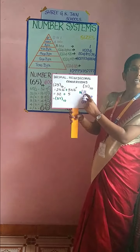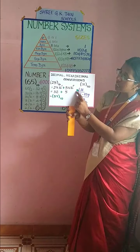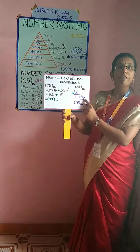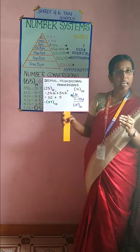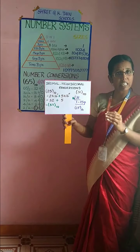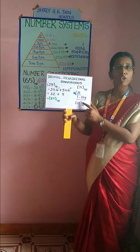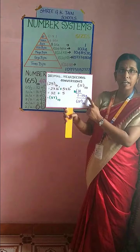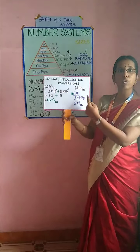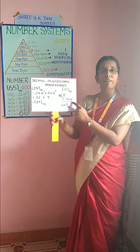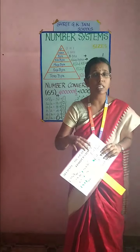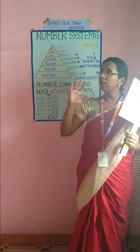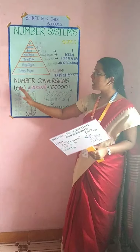Same way, if a decimal number is given to convert to hexadecimal, the procedure is the same. Divide the decimal number by 16. For example, 31 divided by 16: 16 goes 1 time into 31, with remainder 15. Since after 9 you cannot write 10 or 11 or 12 — you write A, B, C, D — so 15 is equivalent to alphabet F. The answer is 1 and F. You write from MSB to LSB, so the result is 1F.